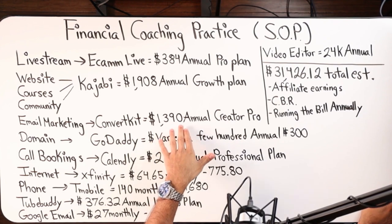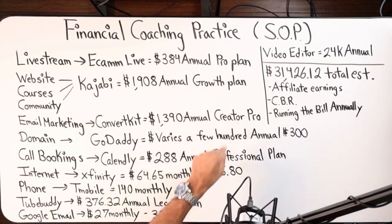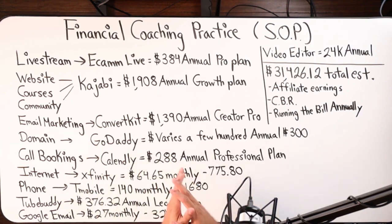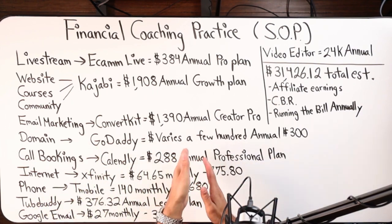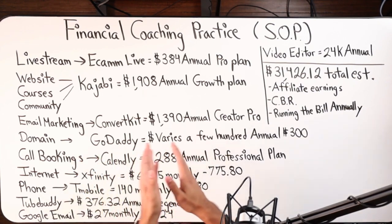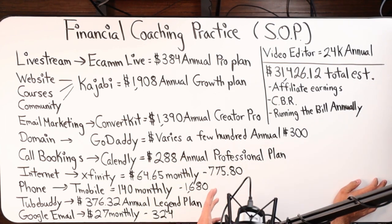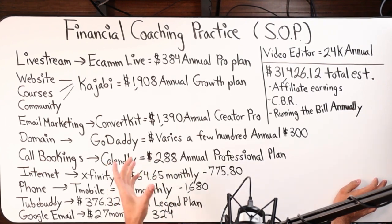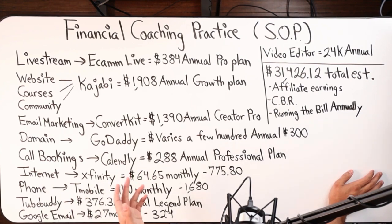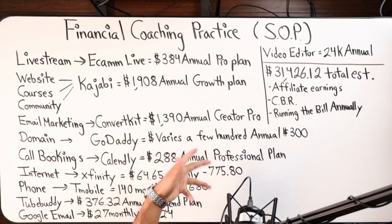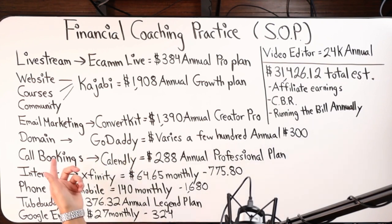For email marketing I use ConvertKit — $1,390 on the annual plan, which is the creator pro plan. For my domains and emails I use GoDaddy. This can totally vary depending on how long you lock in that domain — you can lock it in for a year, by month, or up to 10 years. In my case it's a few hundred dollars a year after my term expires. I did like a five or ten year lock-in, so I actually won't be paying anything to GoDaddy for another five years or so.